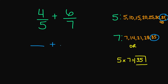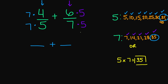Starting with 4 over 5 — what number, if I multiply my 5, will give me 35? Counting up: 5 times 7 is going to give me 35. So I'm going to multiply top and bottom by 7. For 6 over 7 — counting up: if I multiply top and bottom by 5, I'm going to get 35 in my denominator. So: 7 times 4 is 28, 7 times 5 is 35. And then 6 times 5 is 30, and 7 times 5 is 35.